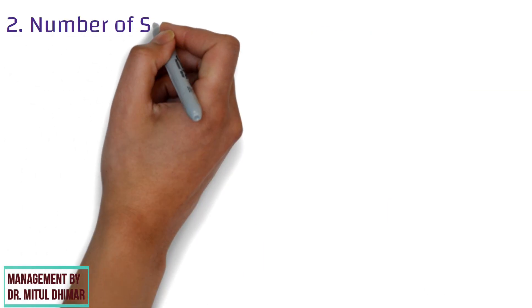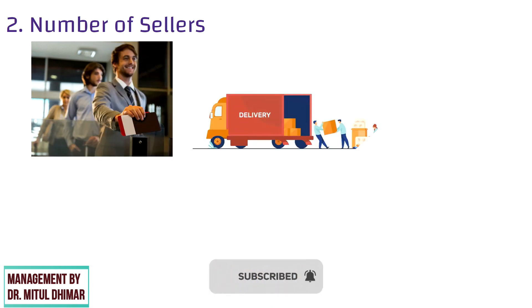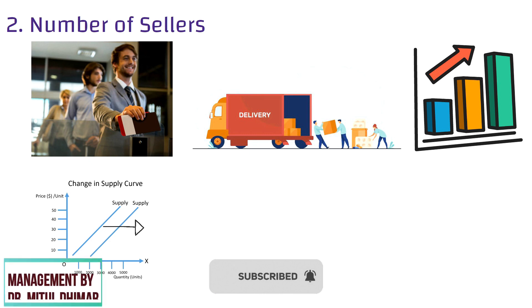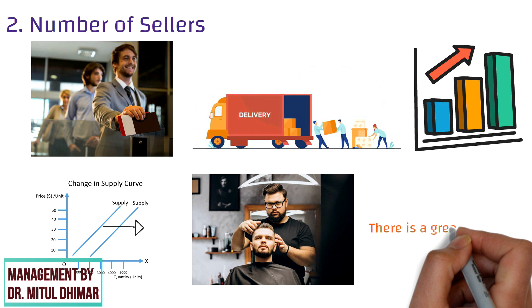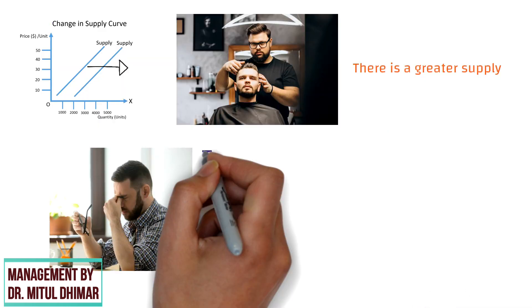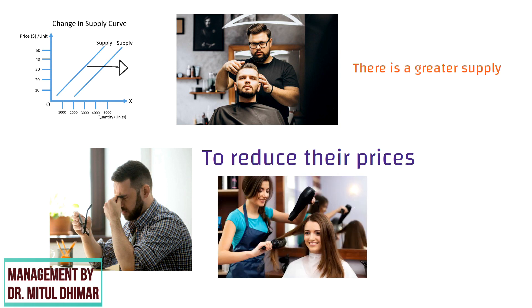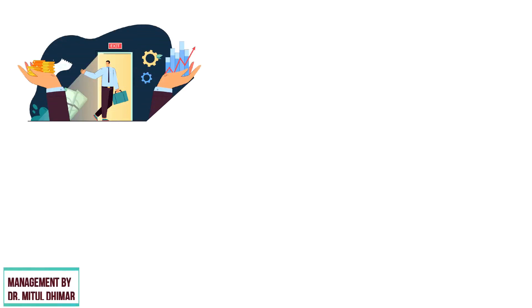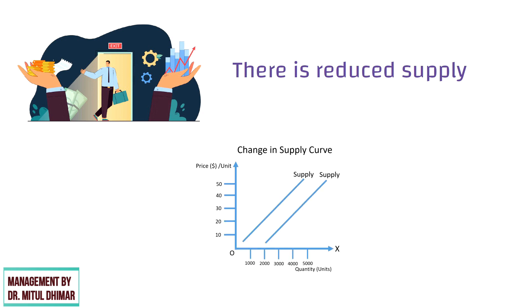Number 2: number of sellers. When new businesses enter the market, supply increases, moving the supply curve to the right. For example, if a new barber opens in the same neighborhood, there is a greater supply, which puts downward pressure on other barbers to reduce their prices. As a result, a higher quantity is provided but at a lower price. In the same fashion, when businesses leave the market there is a reduced supply and the supply curve shifts to the left.